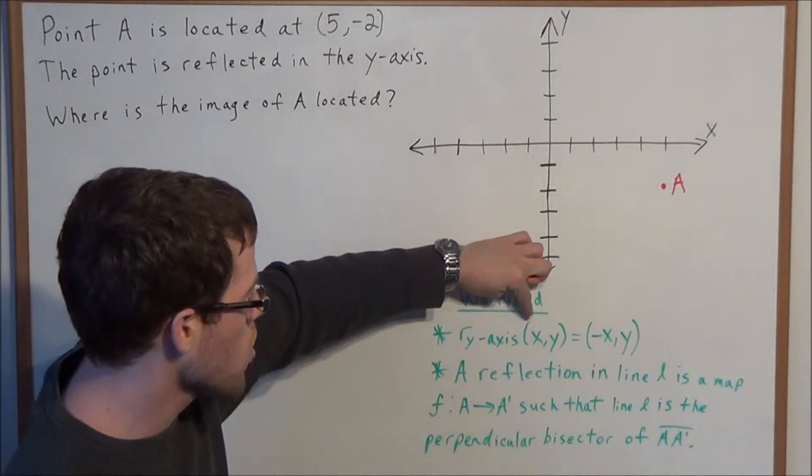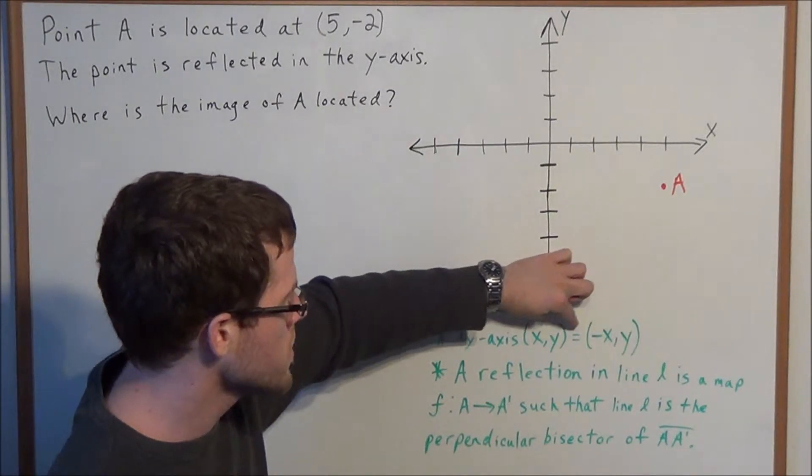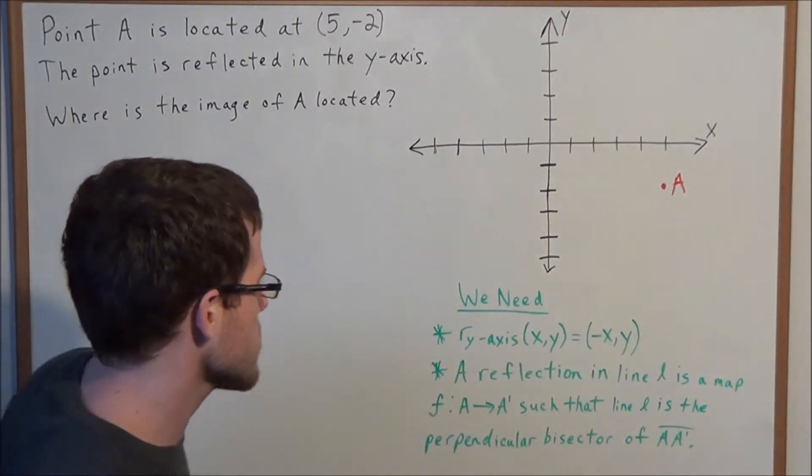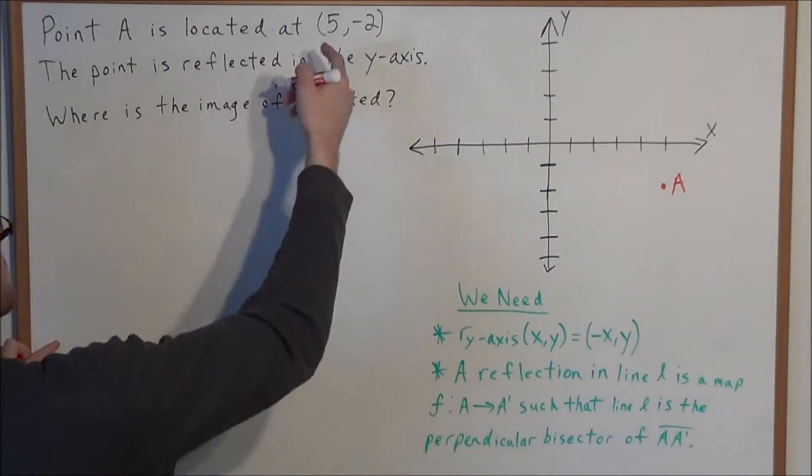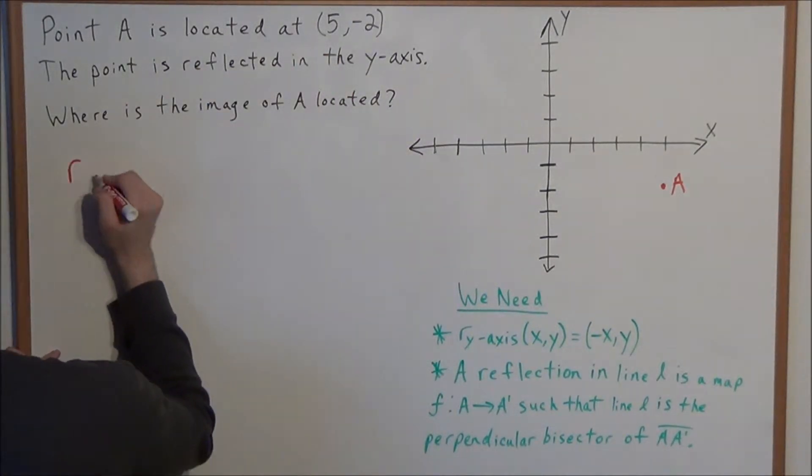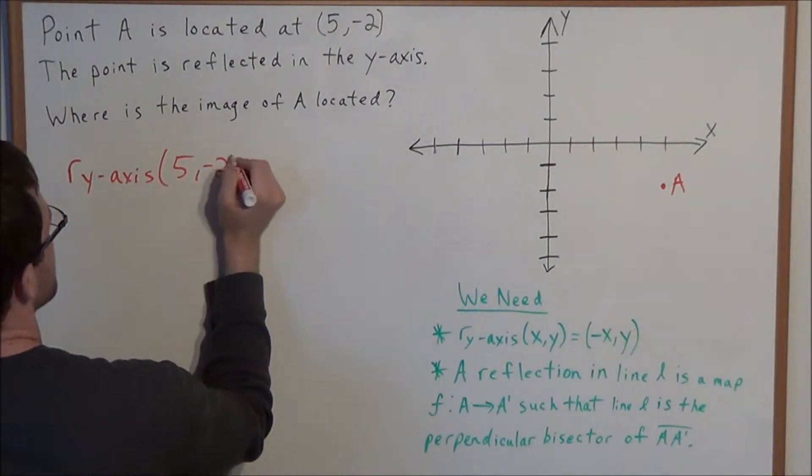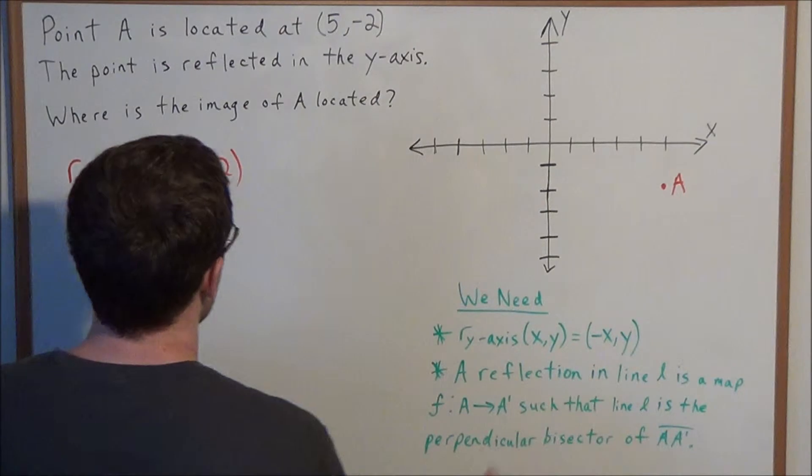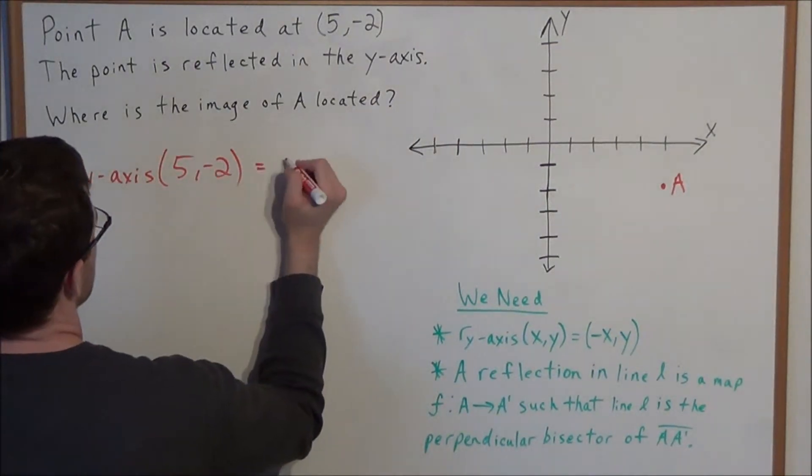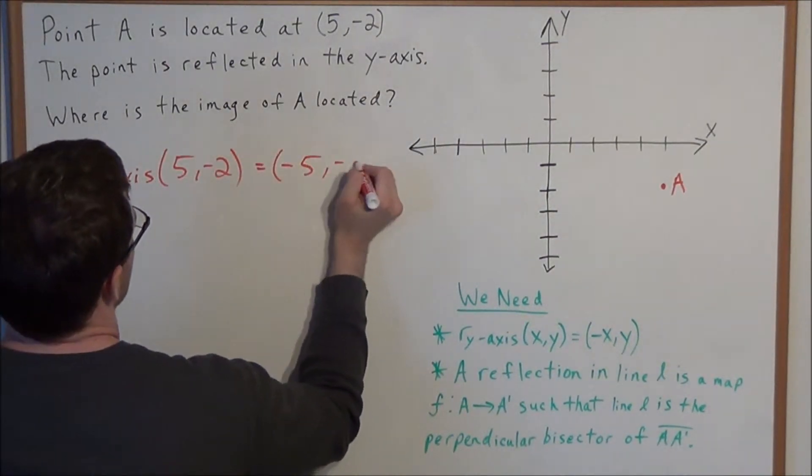So to reflect in the y-axis, all we need to do is negate the x-coordinate. So let's look at this method first. If we have the point 5, negative 2, a reflection in the y-axis of the point 5, negative 2, when we use this equation, all we need to do is negate the x-coordinate. So this equals negative 5, negative 2.